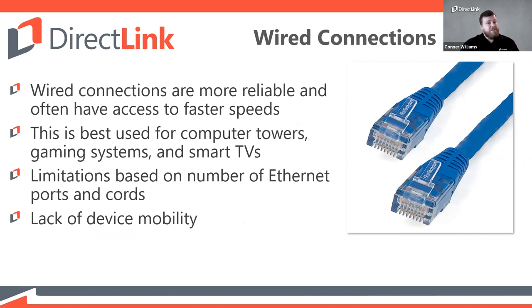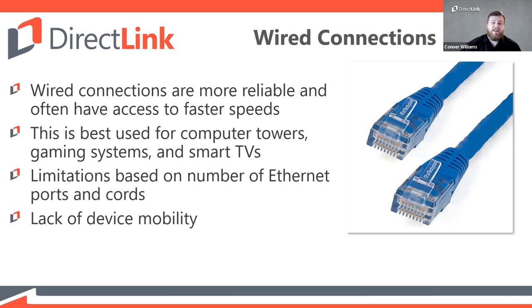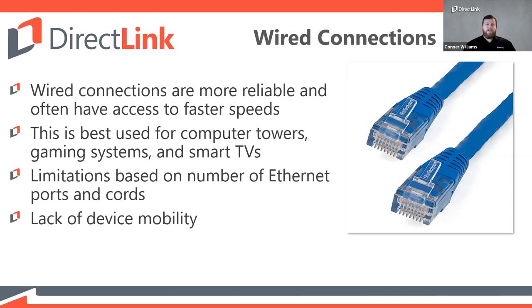In addition to a wireless connection, you can connect to your network through a direct wired connection using an ethernet cord. It looks a little like a phone cord but is thicker and won't fit into a traditional phone jack. Your home likely has one or more special ports in the wall specifically designed for an ethernet cord. I'm going to launch a quick poll — does anybody at home run wired ethernet connections to any of their devices right now, or is everybody just using Wi-Fi?